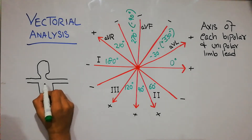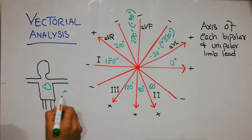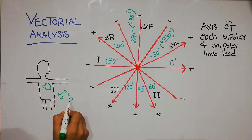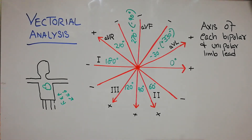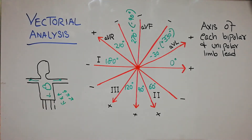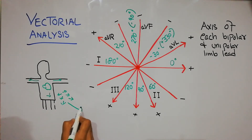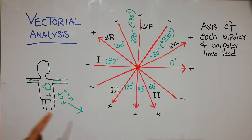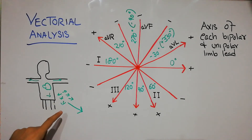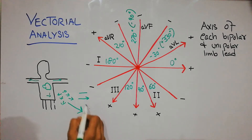When depolarization occurs in the heart, small vectors form in all directions because the electric current is spreading throughout the heart muscle and to other body parts from where it can be detected. If we add up all these small vectors, we get a large vector known as the instantaneous mean vector, which can be in any direction — right, left, upward, or downward.